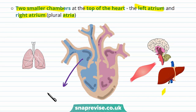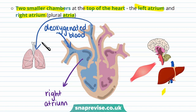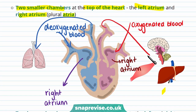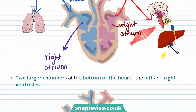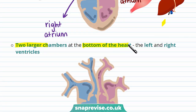This is the right atrium. Deoxygenated blood enters the right atrium and this blood is eventually pumped to the lungs to be oxygenated. This is the left atrium, where oxygenated blood from the lungs enters. This blood then leaves the heart to supply tissues of the body with oxygenated blood.